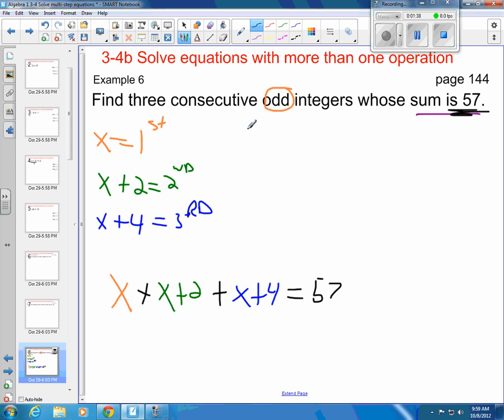Now I just need to combine like terms. So I've got x, x, and x. So there's three x's. And I've got a plus 2 and a plus 4, so that's plus 6. And that is 57.